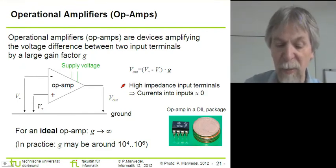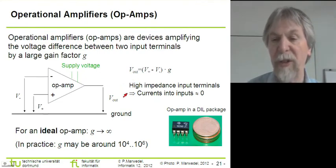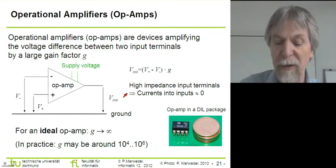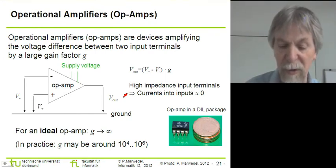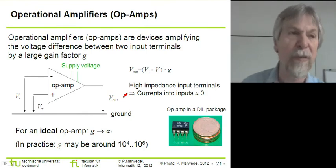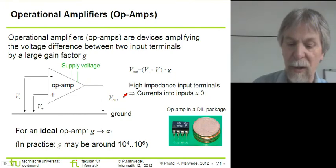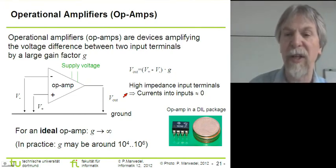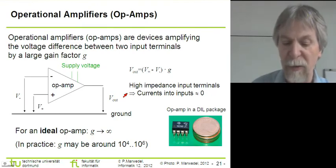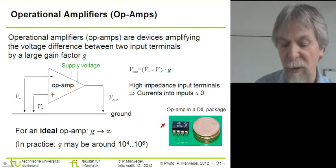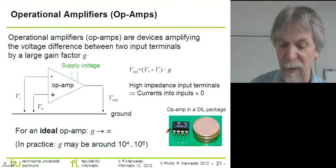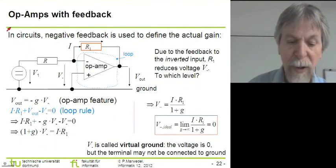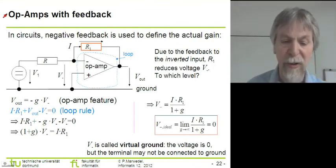Another property of op-amps is that the inputs have very high impedance, so for most practical applications we can assume no current flows into the inputs — only in very special cases must input current be considered. Op-amps are available in various forms: integrated into complex integrated circuits, or as off-the-shelf components. For example, the standard 741 op-amp has existed for decades, is quite robust, and is used in many applications.